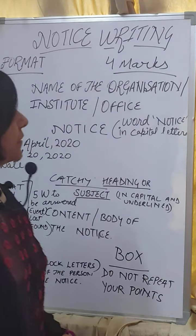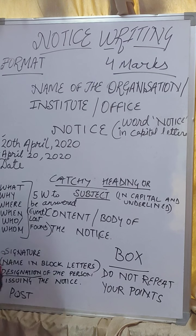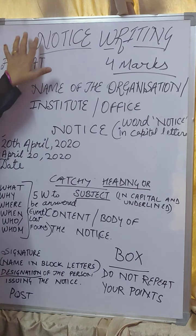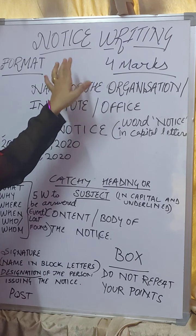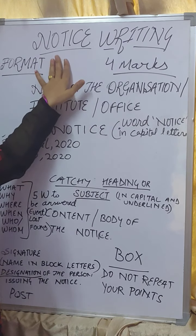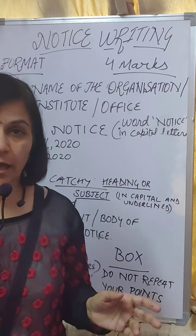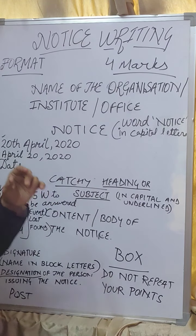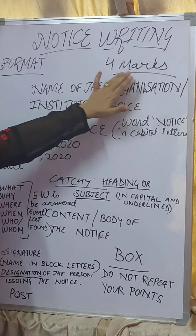Hello students. Today we will commence our class with writing skill. Writing skill comes in section B. The very first question of writing skill comes for 4 marks. It comprises notice writing, advertisement writing, poster making, and invitation and their replies. So the very first thing we are taking over here is notice writing for 4 marks.